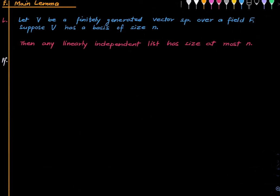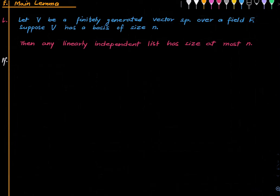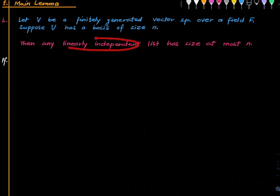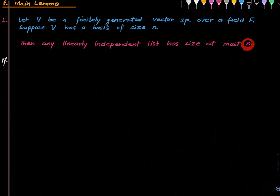Here is the main fact which is the basis of all linear algebra. Fix a finitely generated vector space, so there is a finite subset of V which spans V, and we have F as the base field. Suppose V has a basis of size n, where n is some positive integer. Then any linearly independent list of vectors that one can form using the vectors in V has size at most n. So once we have found a basis of some size, one cannot find a linearly independent list of size greater than that. That's remarkable.